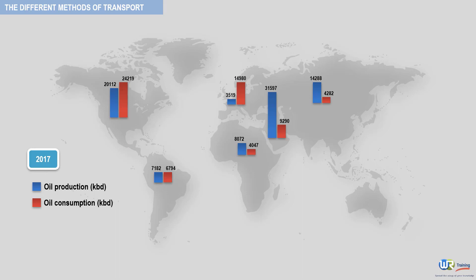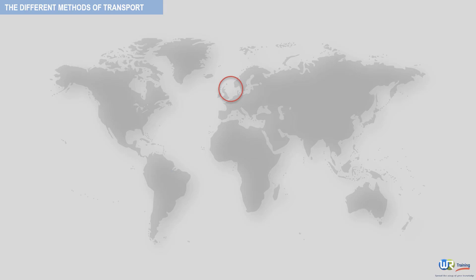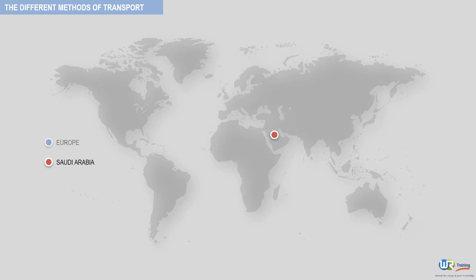In practice, most crude oil buyers have no choice in the method of transport. The means of transport that is the most efficient, most widely used, and in many cases the only one available to both producers and buyers is marine transport. For instance, all North Sea production, the production from most African countries, and a large proportion of production in the Middle East is transported by sea. Nevertheless, in some cases the buyer can choose between transport entirely by sea or a combination of marine and pipeline transport. For example, Saudi Arabian crude could be shipped to Europe by tanker using the long sea route around the Cape, as illustrated on the map.